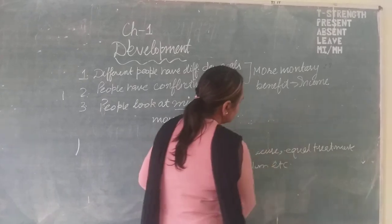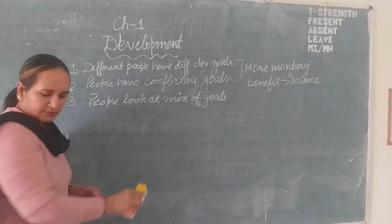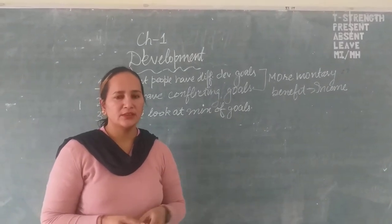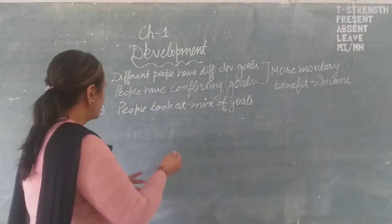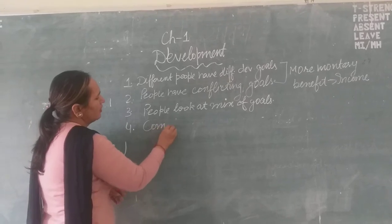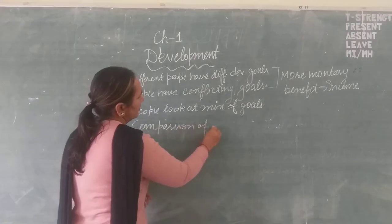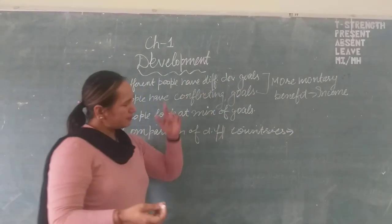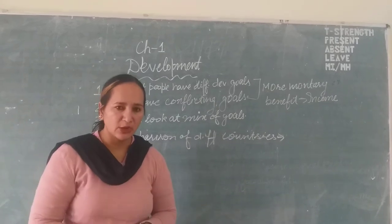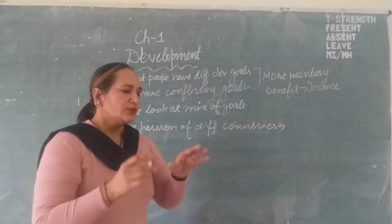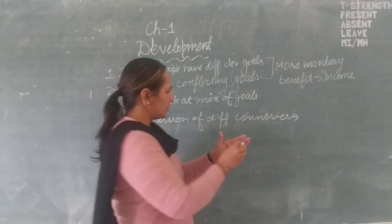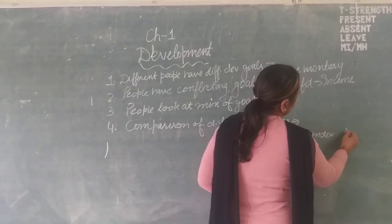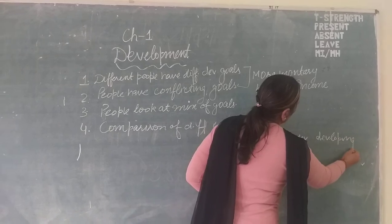Now, when different people have different developmental goals and these goals are conflicting, on what criteria do we compare different states, different regions, and different countries? The next topic is comparison of different countries or states. On this basis, we can say that a country is a developed country, an underdeveloped country, or a developing country. There are three types of countries.